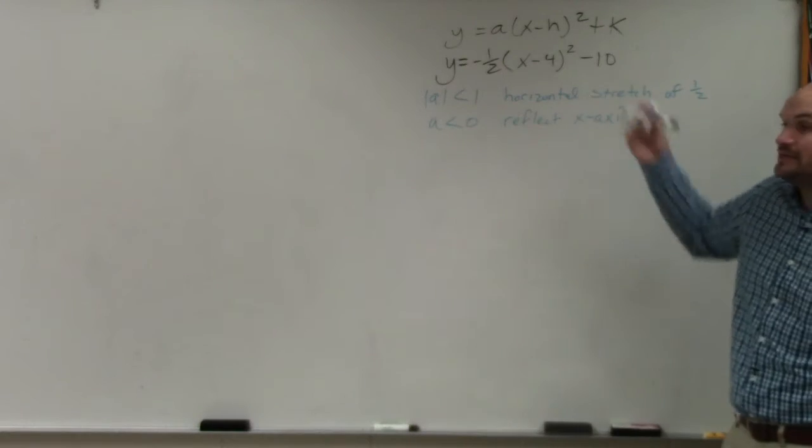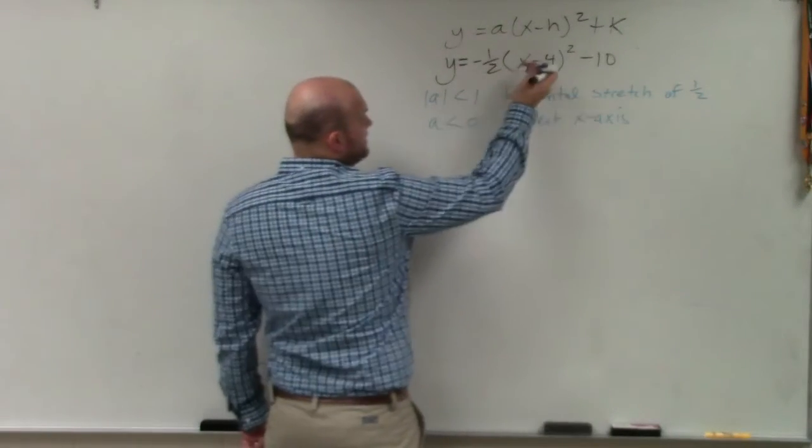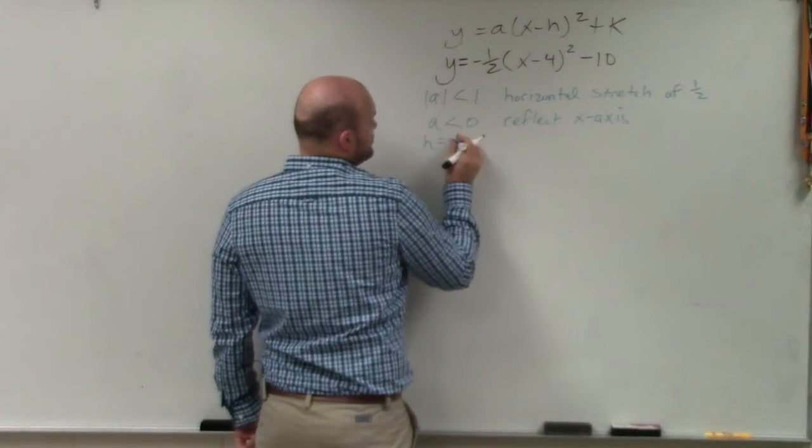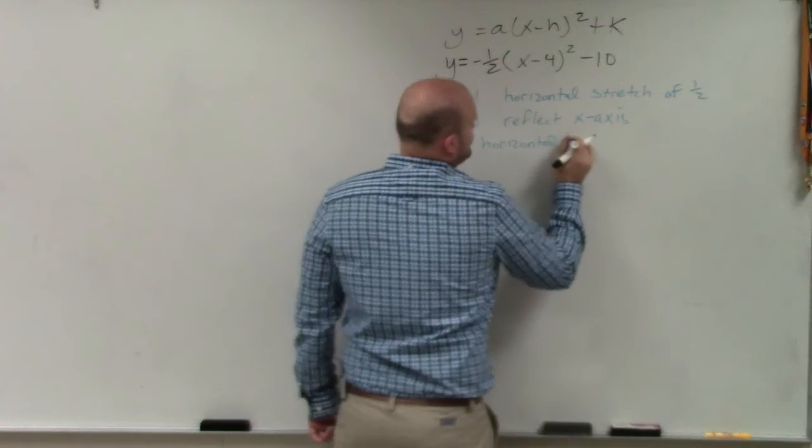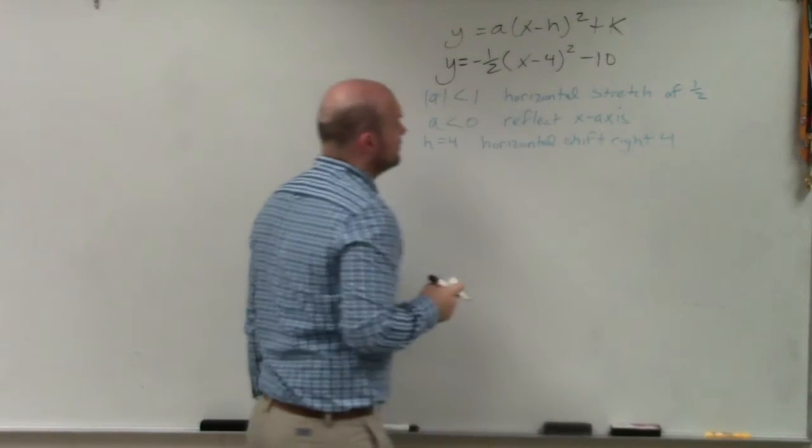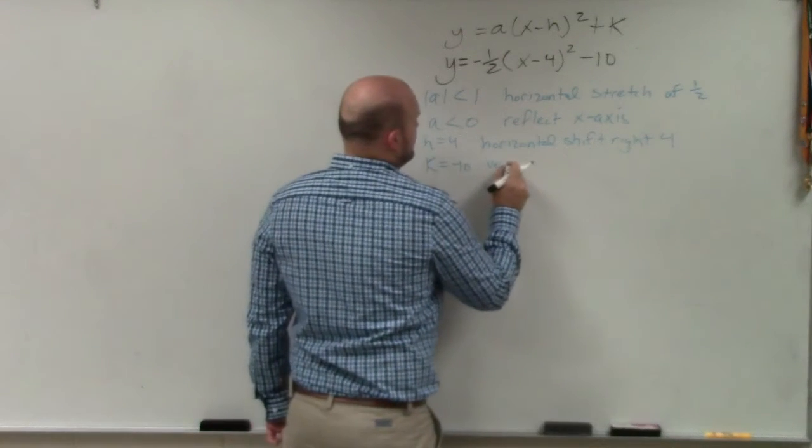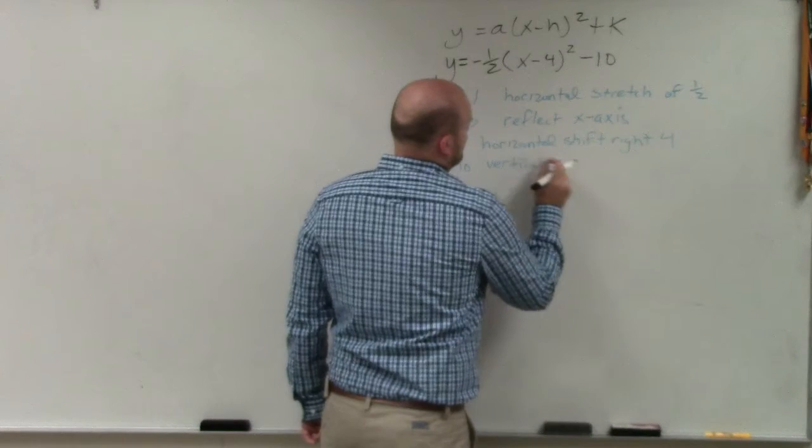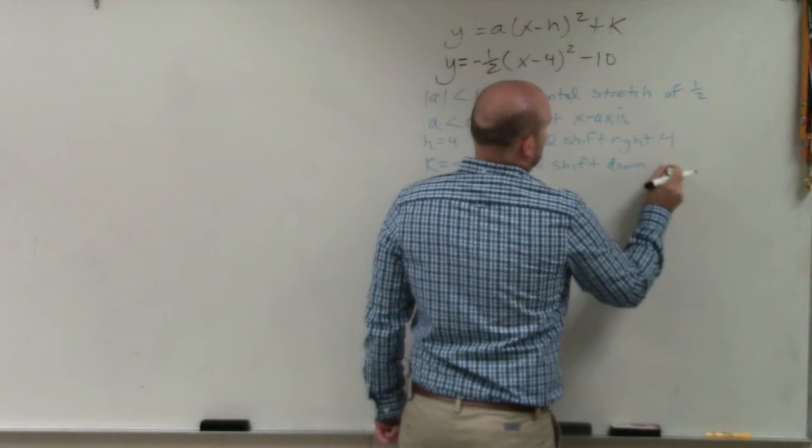Now we need to look at our vertex. So you can see here my h is equal to 4, which is a horizontal shift right 4. And my k is equal to negative 10, which is a vertical shift down 10.